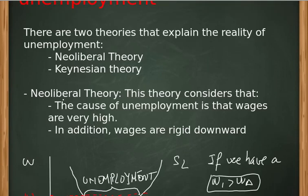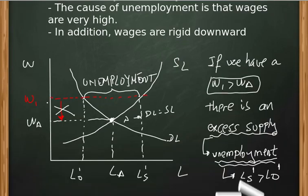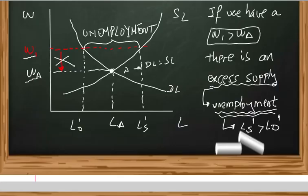The first one, neoliberal theory — this theory considers that the cause of unemployment is that wages are very high. In this image, the salary or wage in equilibrium is this, and if we have a new wage higher than the salary of equilibrium, there is a surplus labor supply, which is the unemployment, because supply of labor is greater than demand for labor.